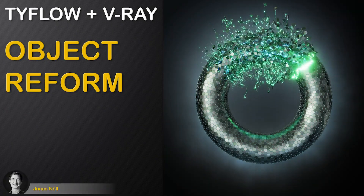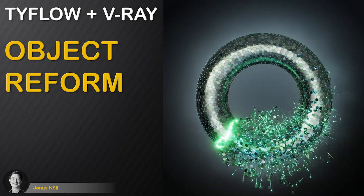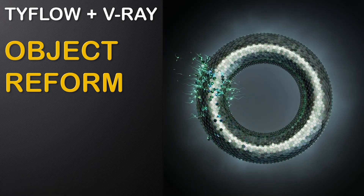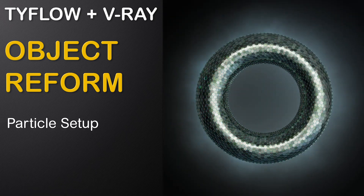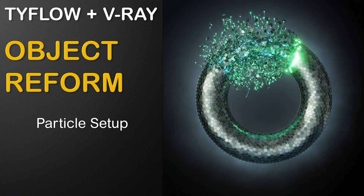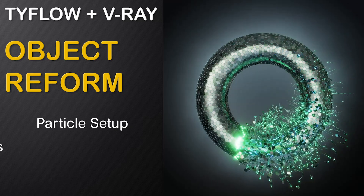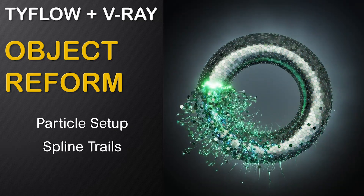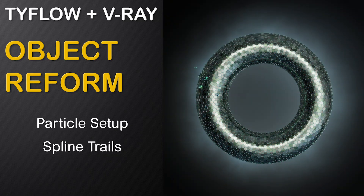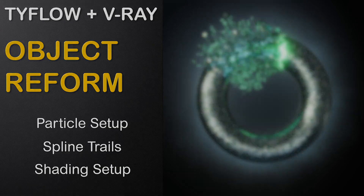In this video we will use Tyflow to create interesting animations in 3ds Max and V-Ray. For this we will first build a particle setup to destroy and reform our geometry, then generate splines to add dynamic trails, and finally build all the required shaders for the final effect.